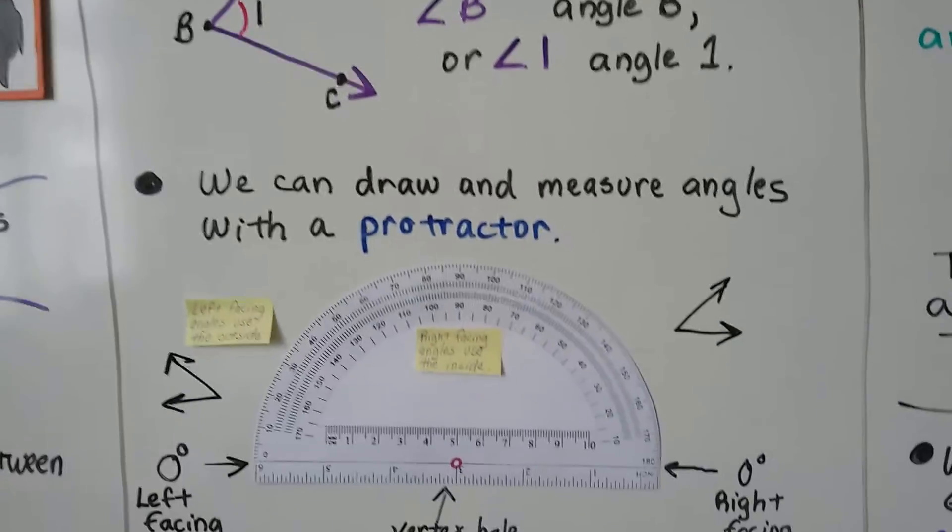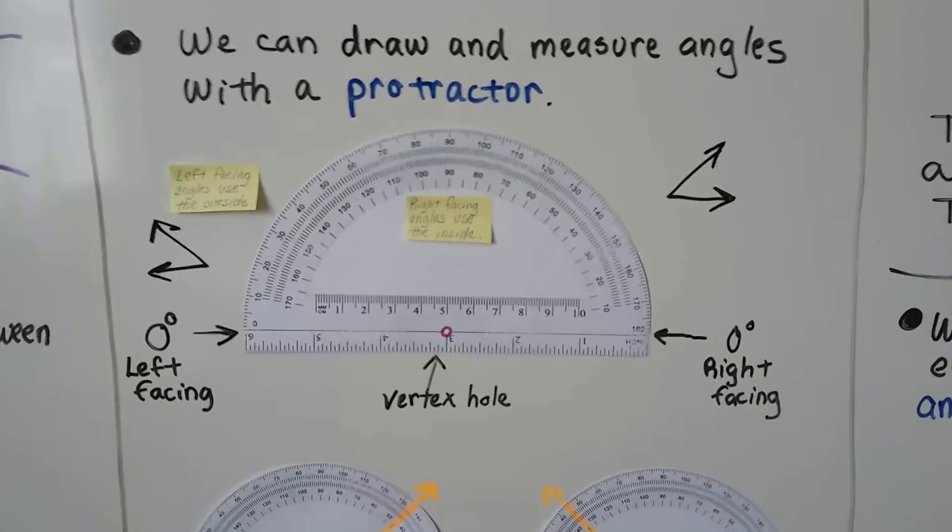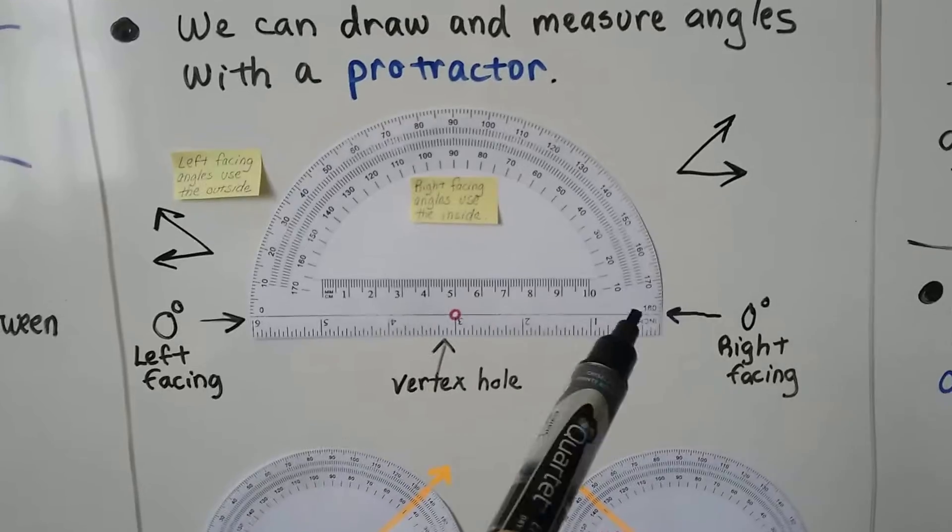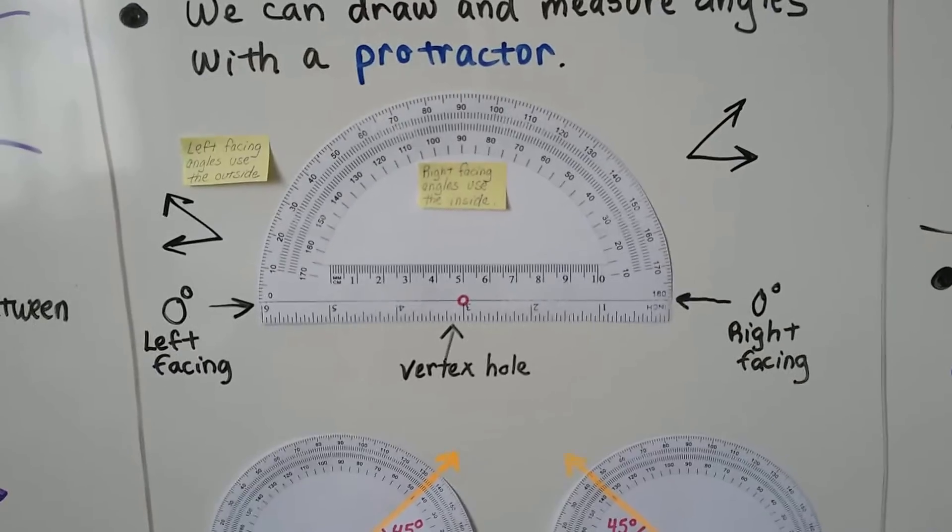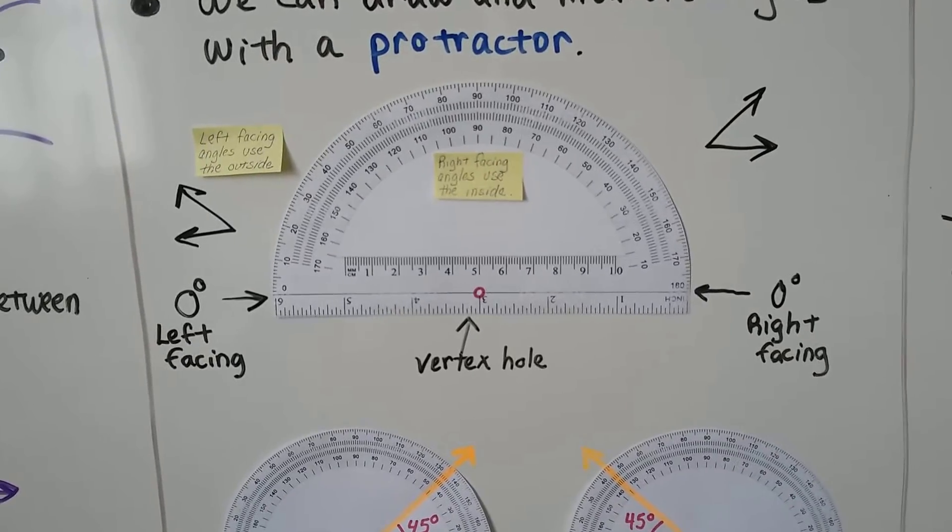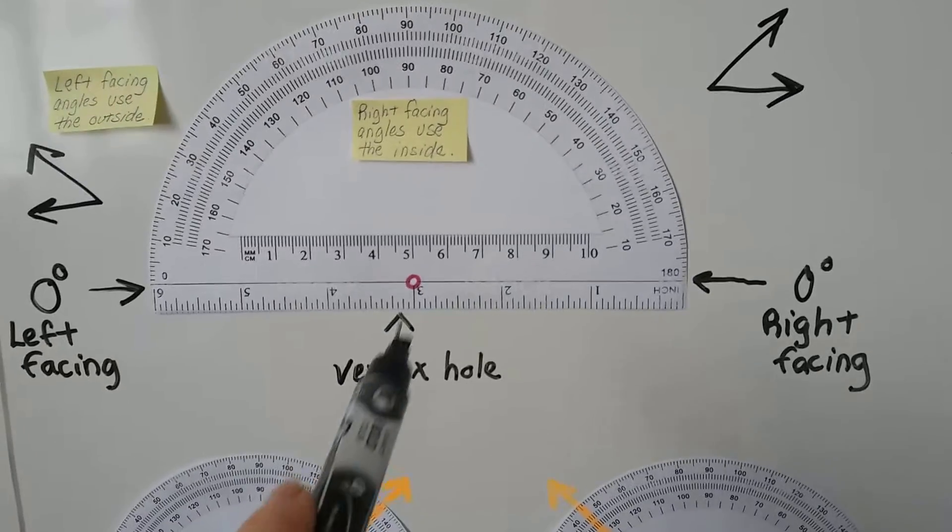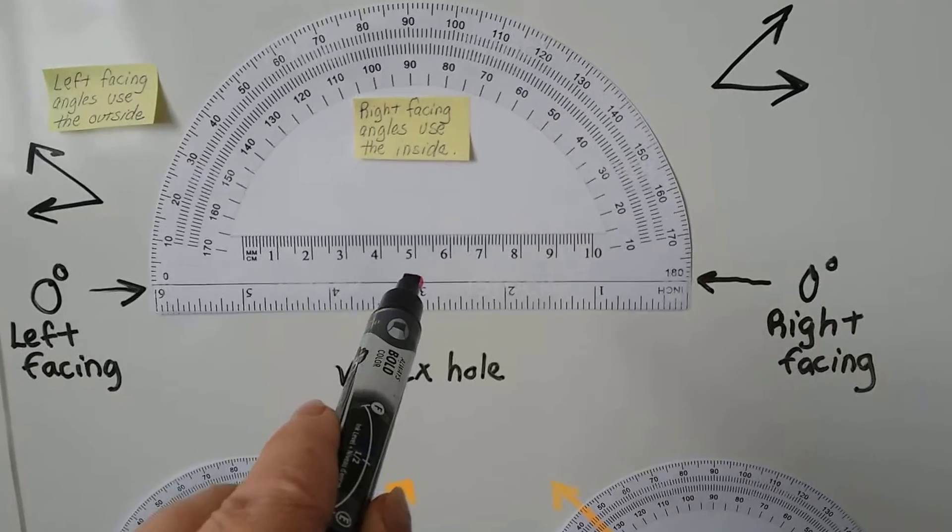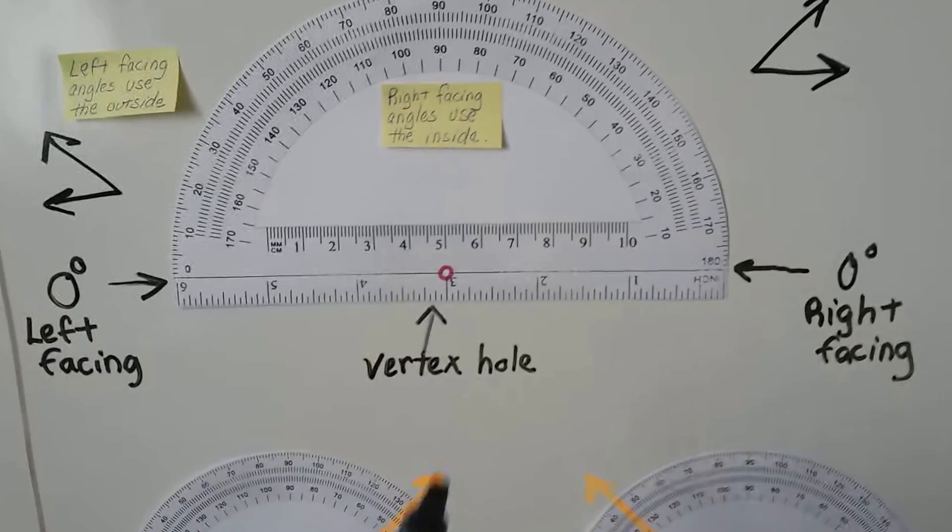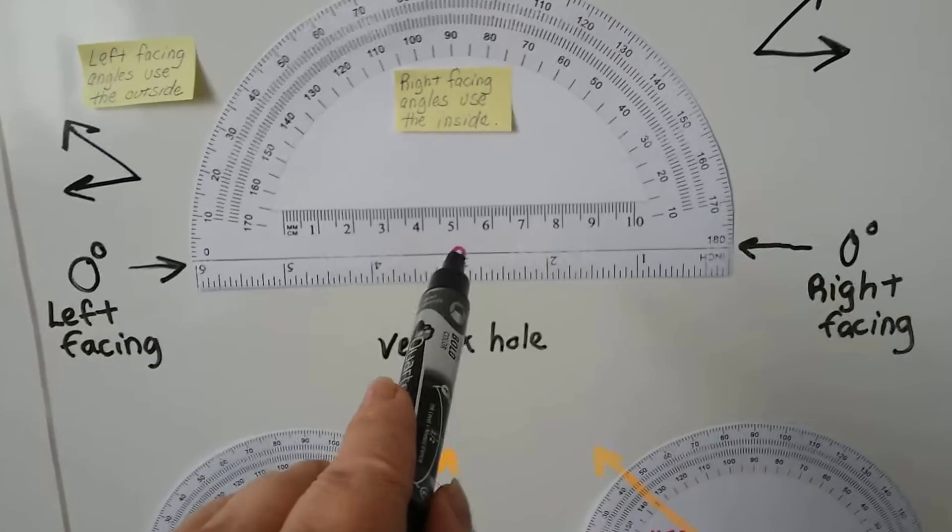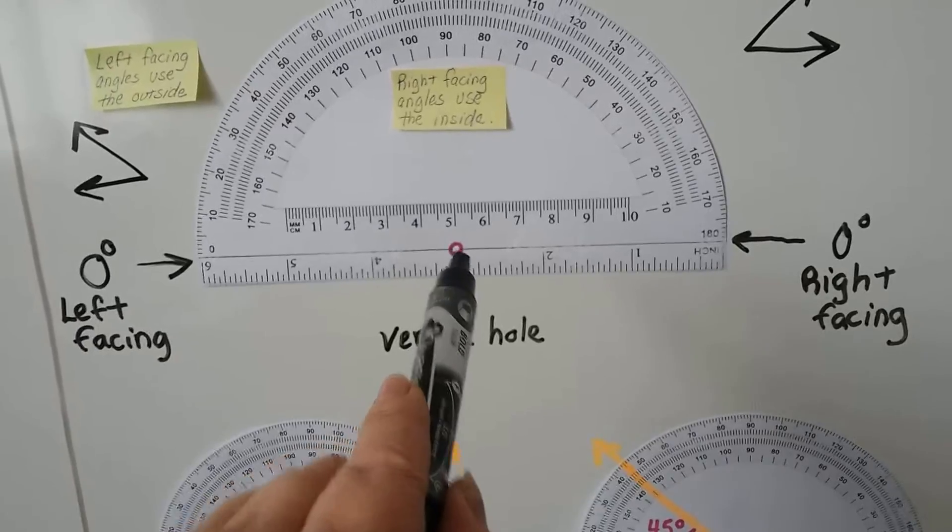We can draw and measure angles with a protractor. And it looks like this. And the clear ones are the best to get. And they don't cost very much money. They're usually just a dollar or two. Now, I want you to look very closely here. You're going to see a vertex hole right there. And you'll be able to put a pencil there or line up the vertex with it.